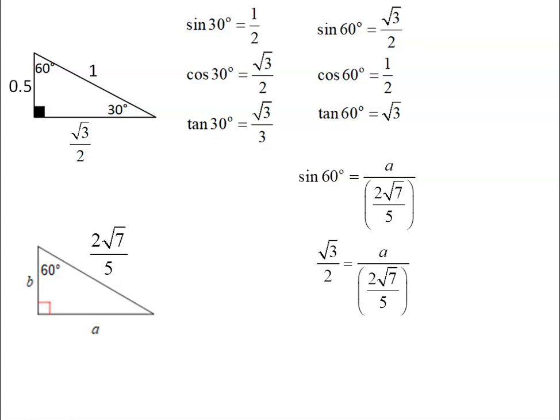If I cross multiply, I'll get 2a on one side and on the other, I get 2 root 7 over 5 times root 3. And the rule is that I multiply together the two radicals. And when I divide by 2, this is my answer.